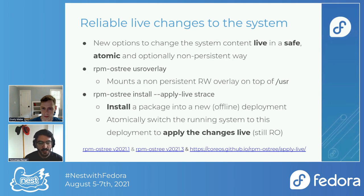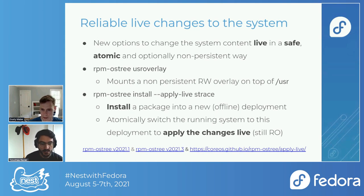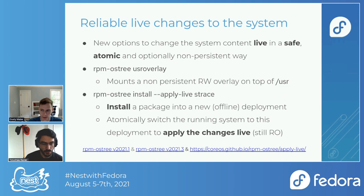We added a new command that installs packages live on a system. The idea is you would call 'rpm-ostree install', for example 'stress' if you want to debug something, and you can use the '--apply-live' option to apply changes directly. Normally overlaying a package creates a new deployment for the next boot, but with '--apply-live', RPM-OSTree atomically switches the running system to the new deployment so you can immediately use the package. It's perfectly safe because /usr remains read-only and on the next boot you get the new image with the package still applied.